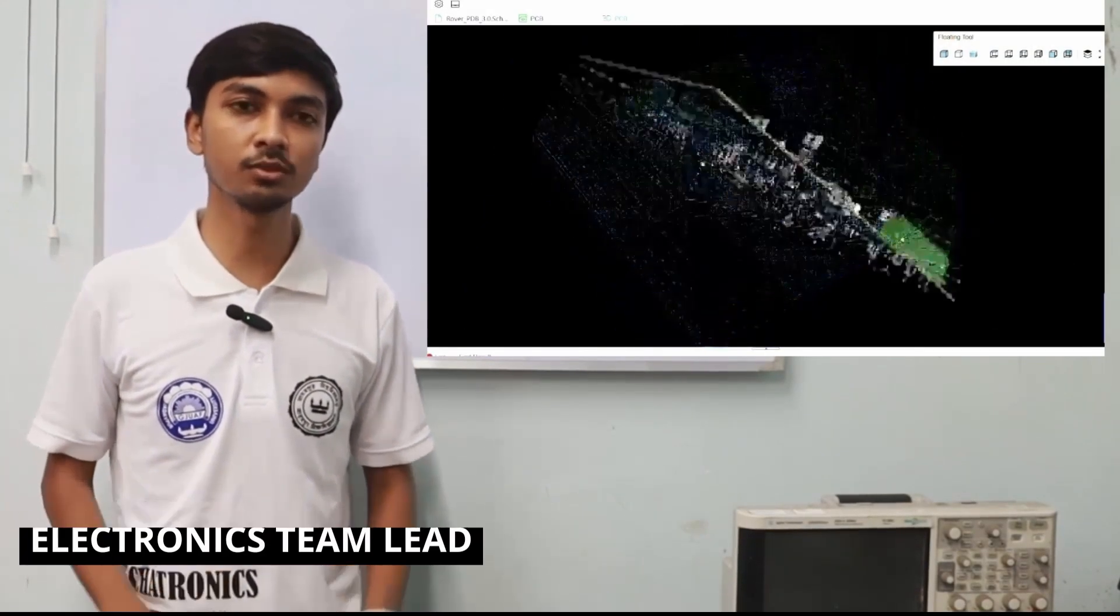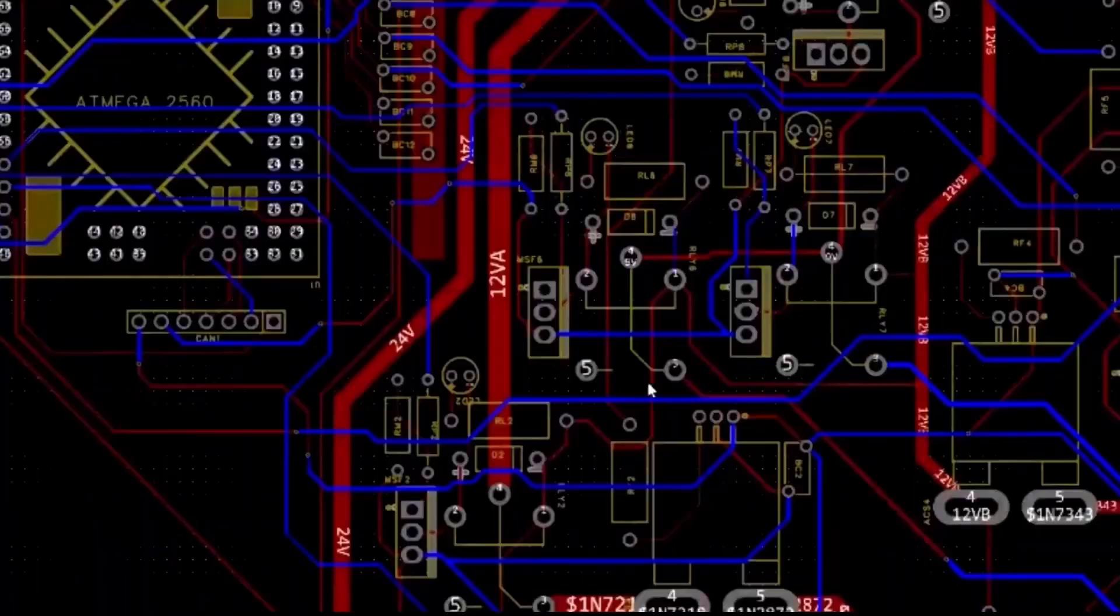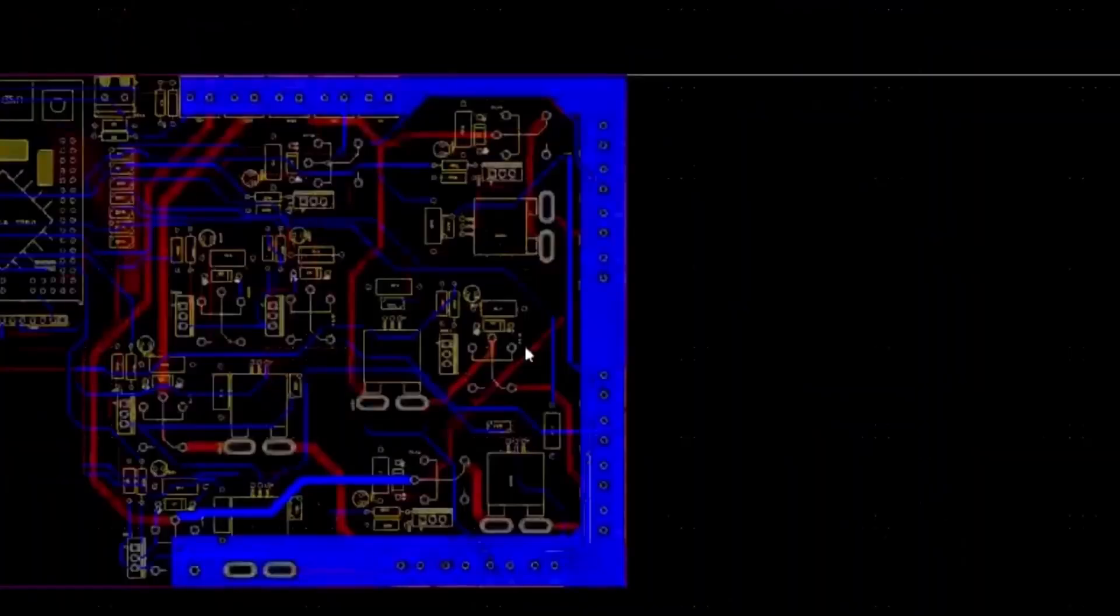Our electronics are built on a custom power distribution board using a dual 3S and 6S battery architecture. We step down power using buck converters with dedicated cooling, ensuring stable voltage for all subsystems.